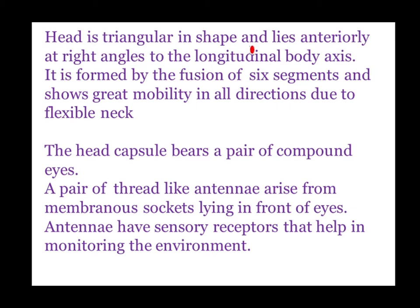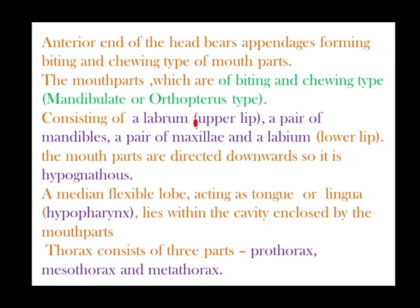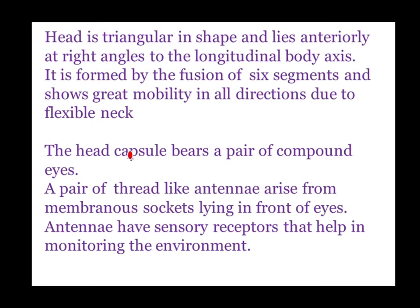The head is triangular in shape and lies anteriorly at a right angle to the longitudinal body axis. It is formed by the fusion of six segments and shows great mobility in all directions due to a flexible neck. The head capsule bears a pair of compound eyes. A pair of thread-like filiform antennae arise from membranous sockets lying in front of the eyes. The antennae have sensory receptors that help in monitoring the environment.